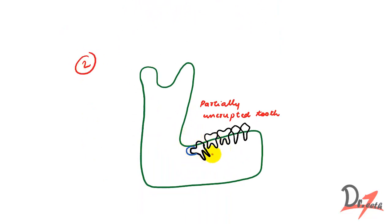In example two, we have a partially erupted third molar. The cyst occurring in this case is usually because of inflammation associated with recurrent perichoronitis. When perichoronitis occurs again and again, it leads to the formation of a cyst. So pathogenesis is mainly developmental but can also have inflammatory origin.